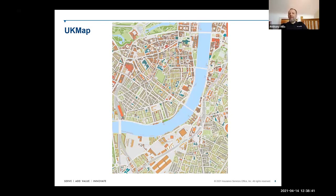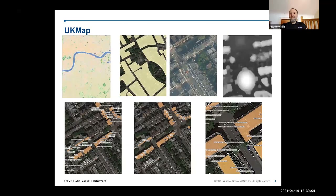UK Map is essentially a seamless spatial database covering the Greater London area out to the M25. Although the name implies it's a map, that really doesn't do it justice — it's a much richer database. It contains information down to the individual floors of buildings in some circumstances. For example, if a building has retail on the ground floor, two floors of offices above, and a residential floor above that, all of that level of information is captured.